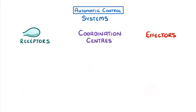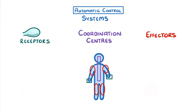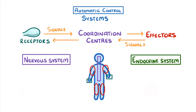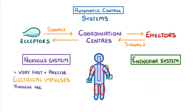A problem though is that these three components might be in different parts of the body, so we need some way to send signals between them. This is where the nervous and endocrine systems come in — we'll look at each of these in more detail in the next two videos. Basically, the nervous system sends very fast and precise electrical impulses through nerves, which allows us to respond to things very quickly, such as when we touch a sharp object.